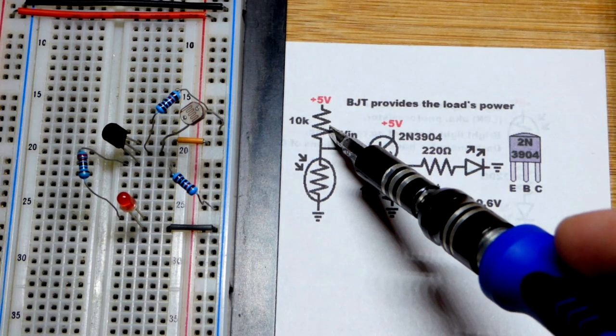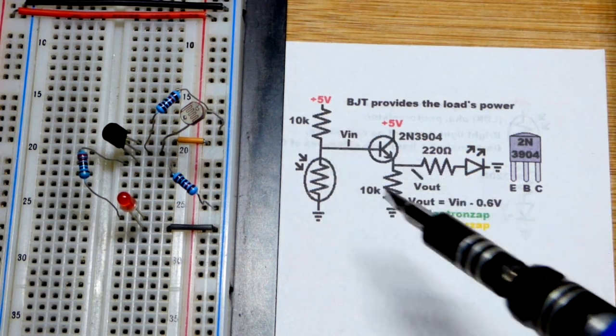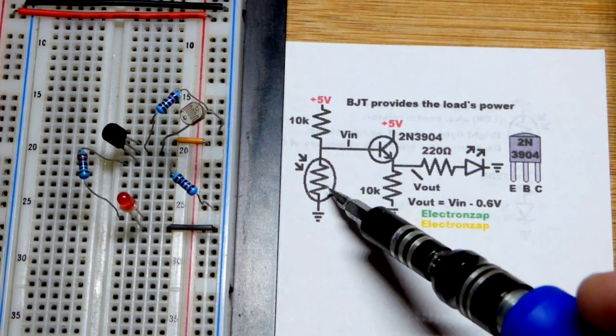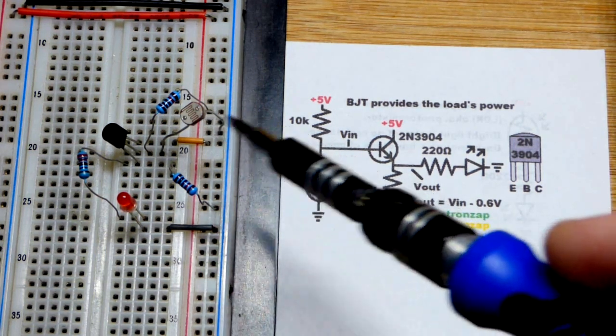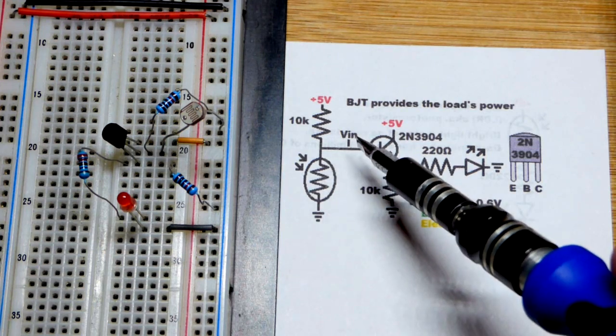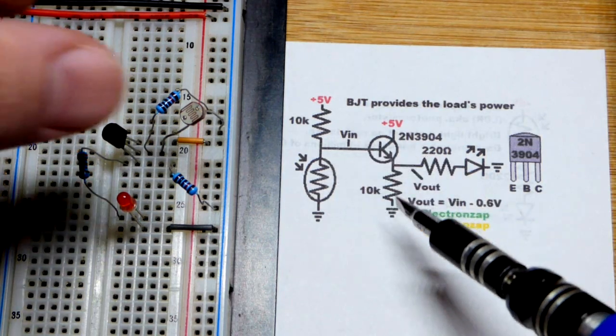The other resistor dividing the voltage is a fixed value resistor. With the light dependent resistor, when enough light is falling on it, like it is now, it's pulling the voltage at the base down enough to keep the transistor off.